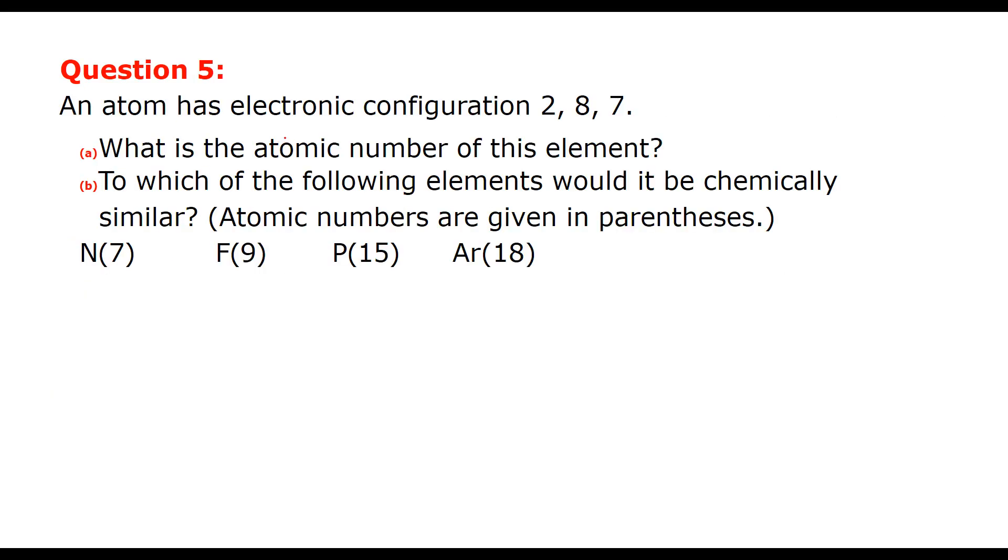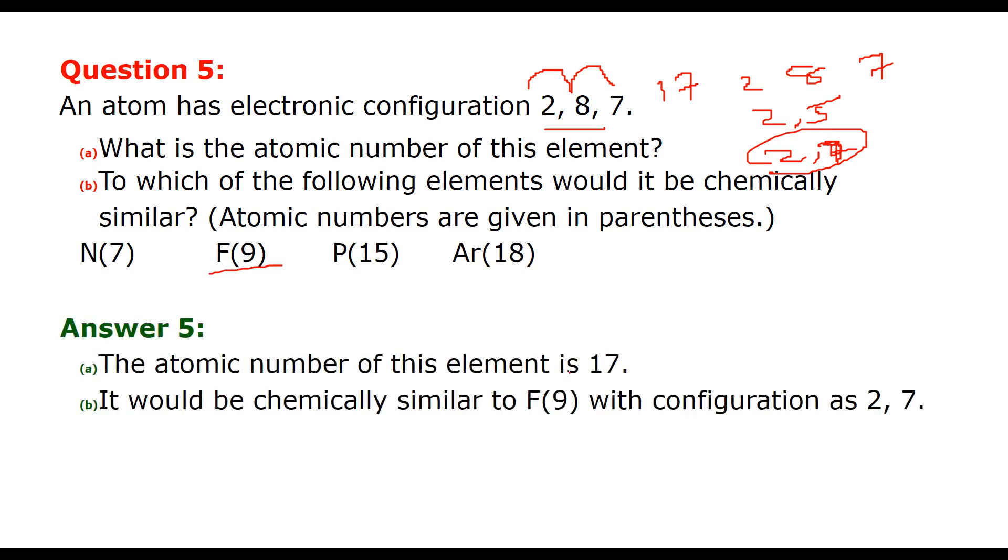The atom has electronic configuration 2,8,7. So what is the atomic number? The atomic number is simply 2 plus 8 plus 7, that is 17. To which of the following elements would it be chemically similar? So 7 is 2, 5, no. We have to match with 2, 8, 7. So 2 and 7, this is matching. So F is the correct answer. The atomic number is 17 and this would be chemically similar to F9 which has the electronic configuration. The valence electrons are 7, valence is 1.